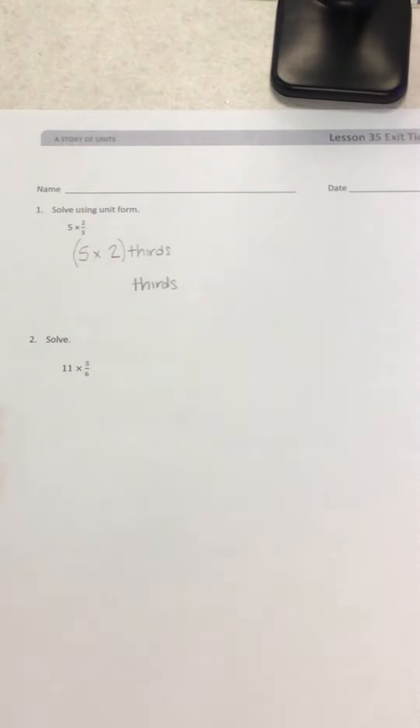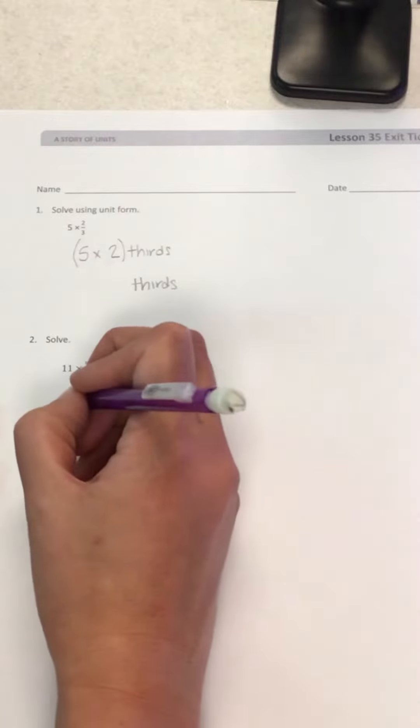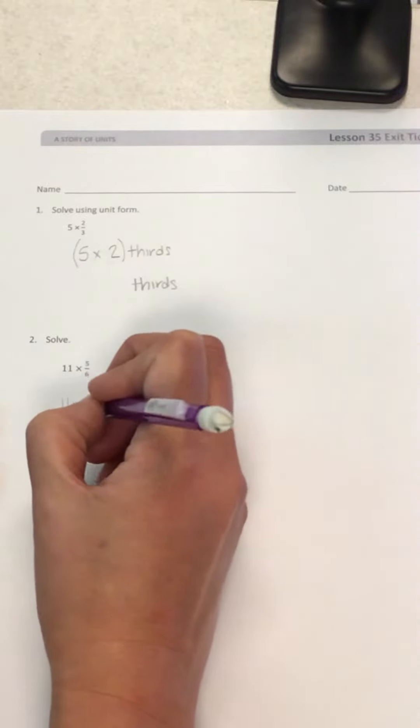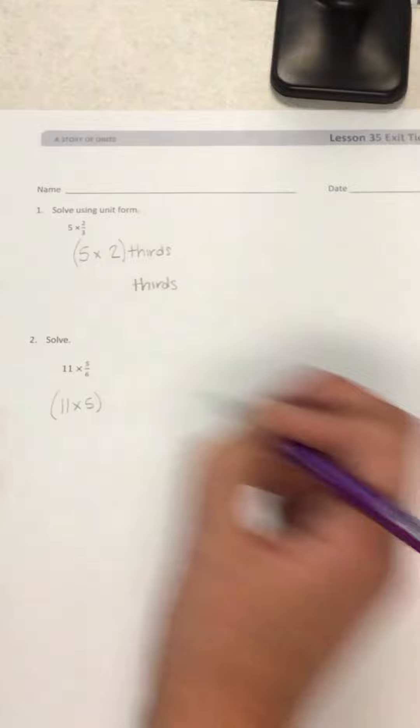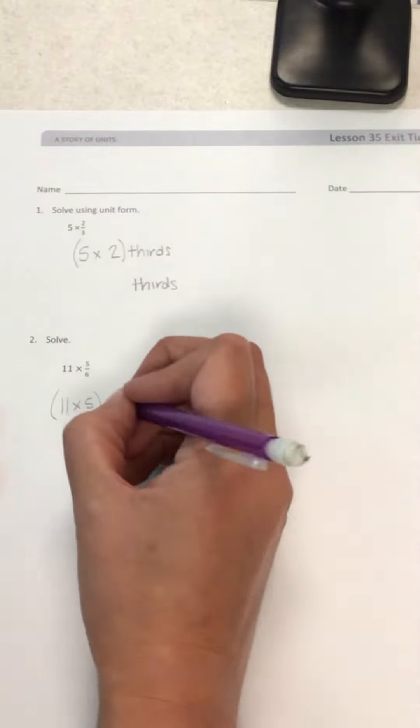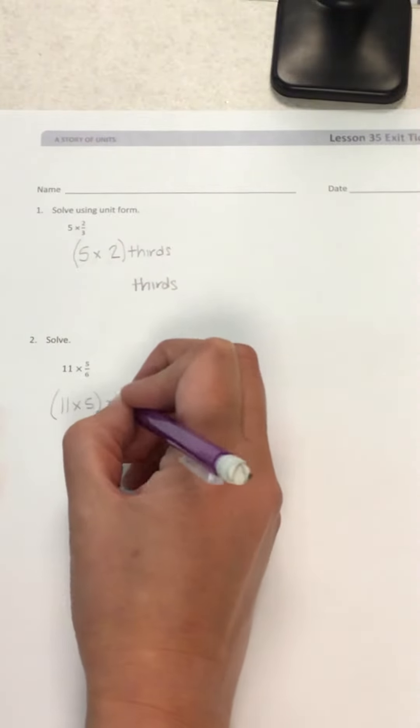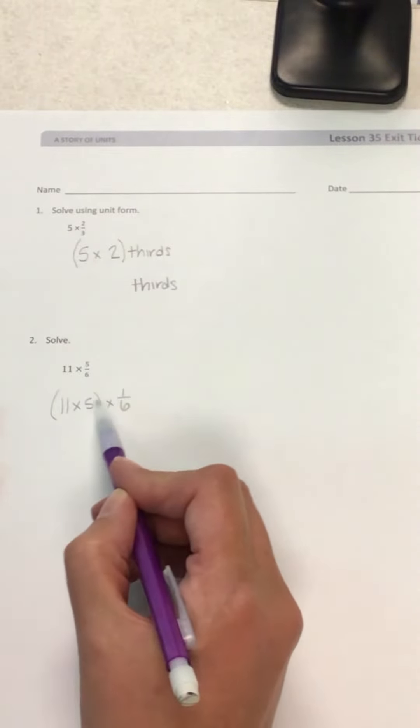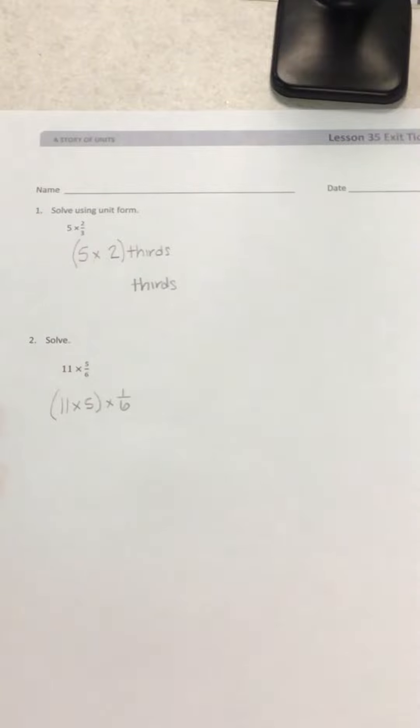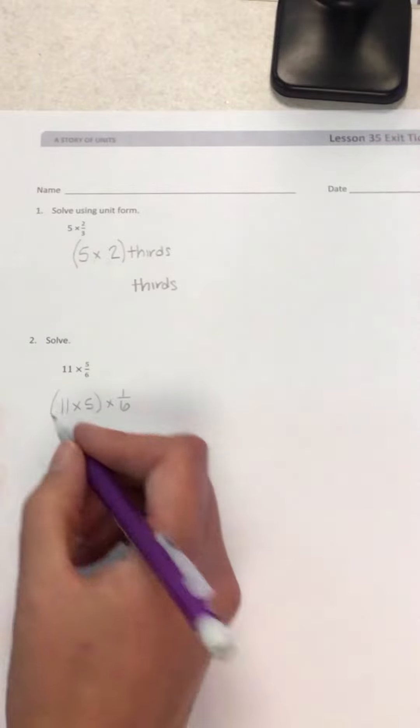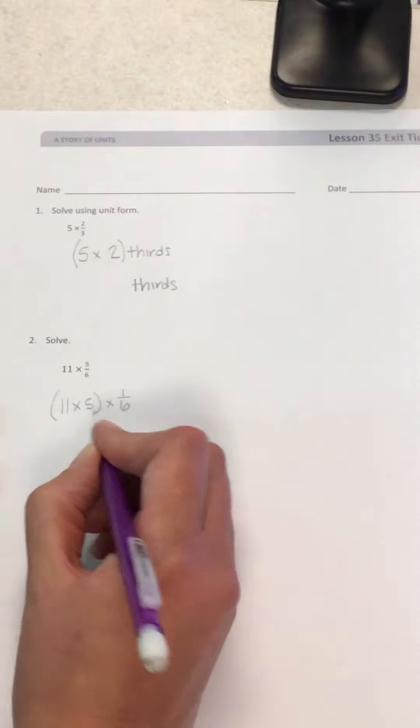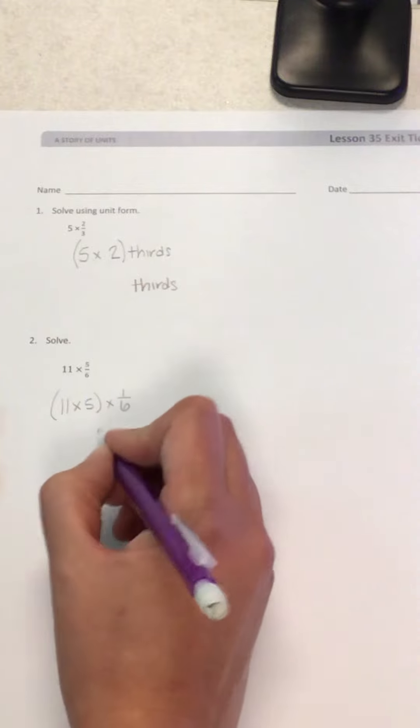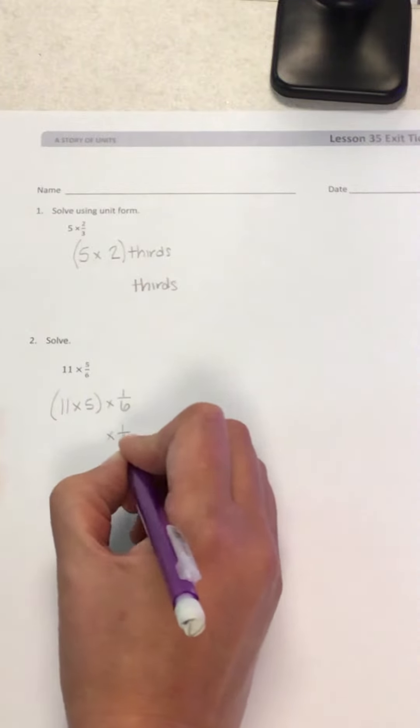I know that the associative property tells me I can group that 11 and 5 together. I'm going to pull that out, and then I'm going to multiply it by the 1 sixths that I replaced since I pulled that 5 over here, and now I have a 1 sixths left. Okay, and so now I'm going to think about what is 11 times 5, and that would be times 1 sixths.